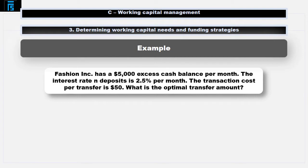Fashion Incorporated has a $5,000 excess cash balance per month. The interest rate on deposits is 2.5% and the transaction cost per transaction is $50. What is the optimal transfer amount?